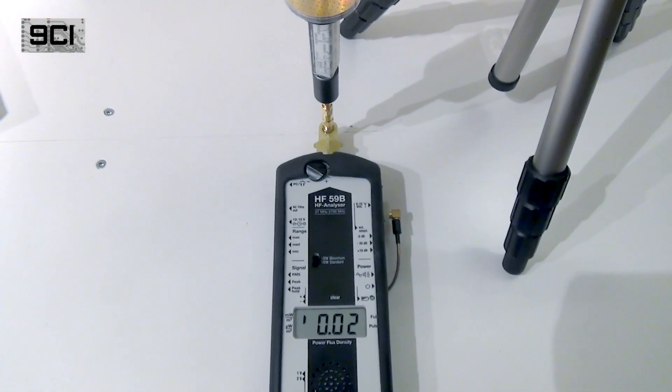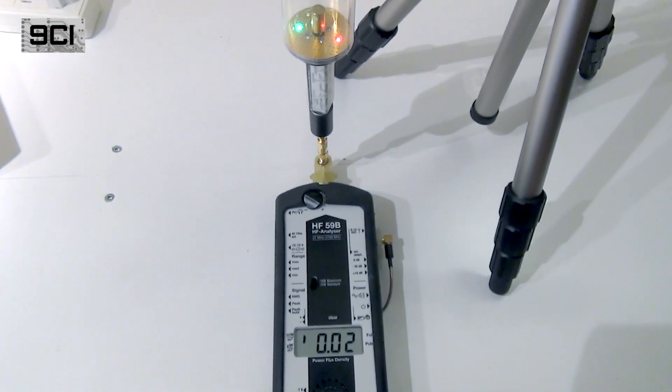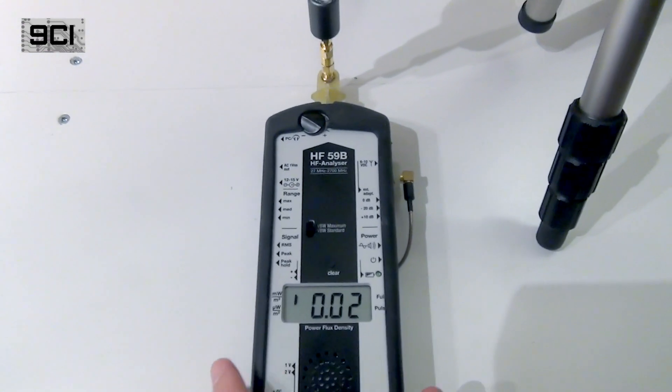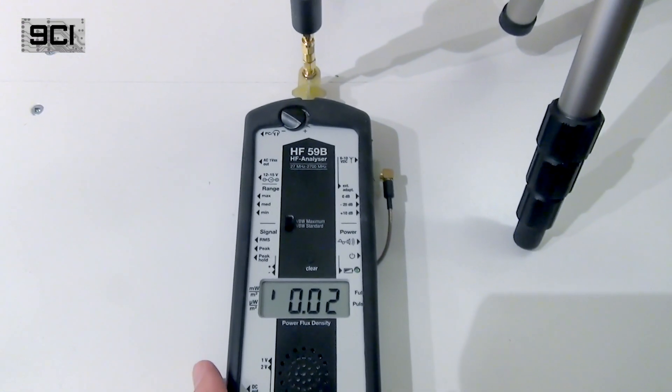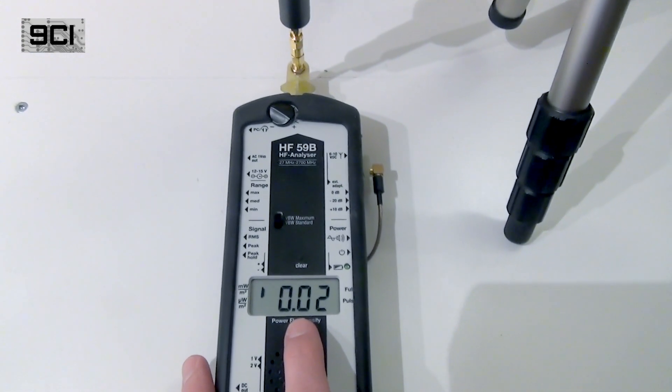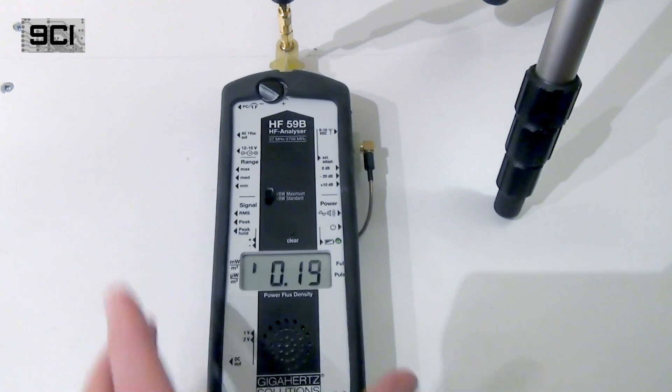Now we're doing the gigahertz solutions HF 59B, starting at 50 microseconds. It's okay for us to keep the VBW standard to a standard setting. In order to catch the pulses on the display, we actually have to put this meter in a peak hold mode.